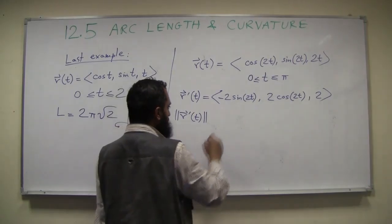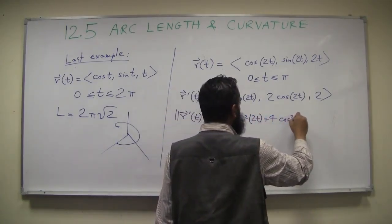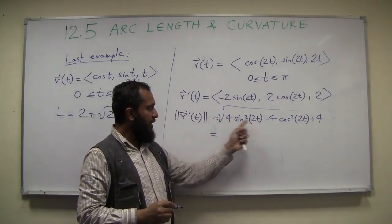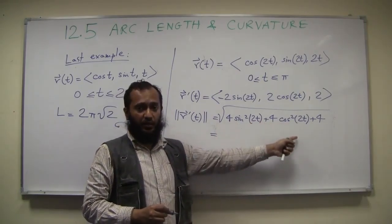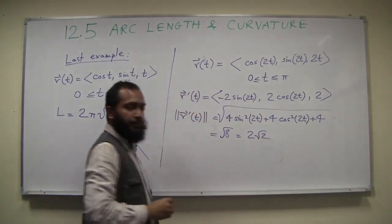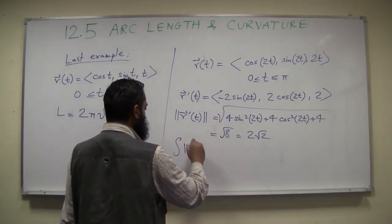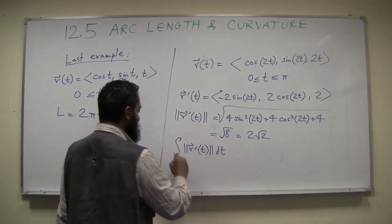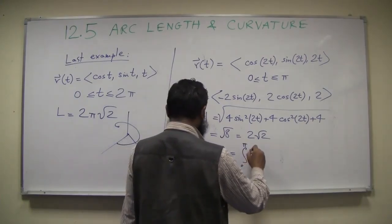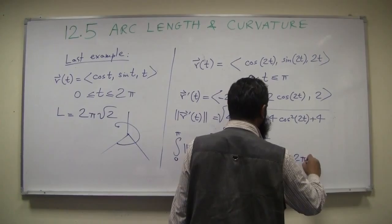The length |r'(t)| = √(4 sin²(2t) + 4 cos²(2t) + 4). Factoring out 4, we get sin²(2t) + cos²(2t) = 1, so we have √(4·1 + 4) = √8 = 2√2. Now we integrate this from 0 to π: the integral from 0 to π of 2√2 dt = 2π√2. This equals the same length we got last time.